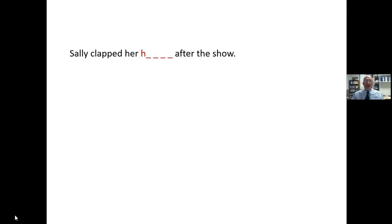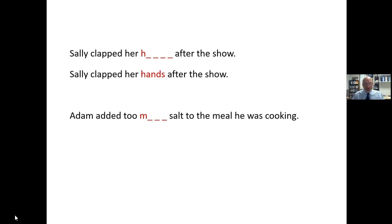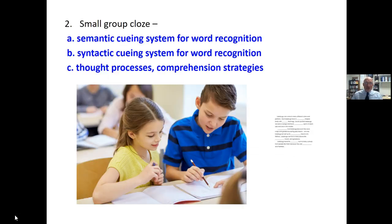Here's an example of cloze activities: 'Sally clapped her ___ after the show.' Students learn to use context clues, or the semantic cueing system. A small group cloze is used to develop not only semantics, but also syntactic awareness and comprehension, because students hear the thought processes of other students.